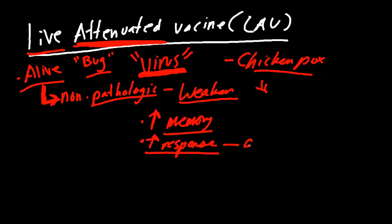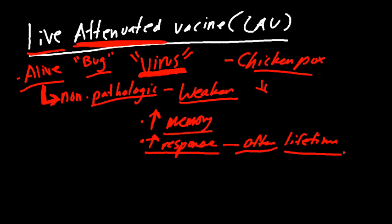This response often lasts for a lifetime. So if our goal is to create antibodies versus a virus or against a bacteria, we're going to want — as a first choice option — to give a live attenuated vaccine. Why? Because those antibodies, those cytotoxic T cells, they'll be around most often for life. You're going to have a lifetime immune response to that agent.